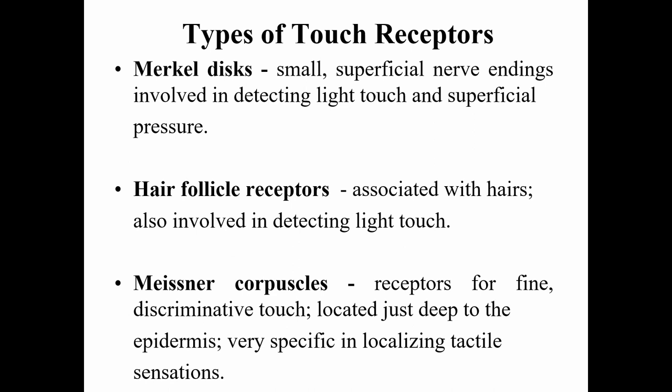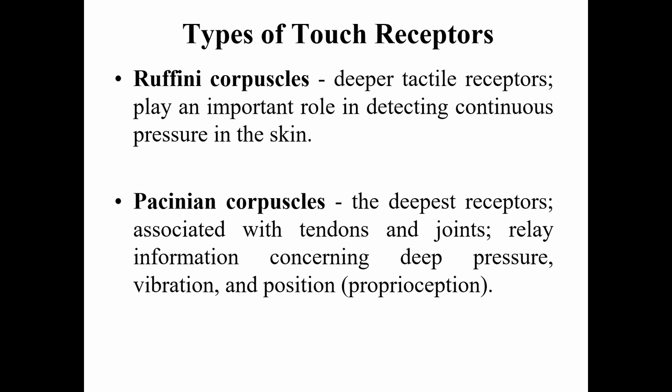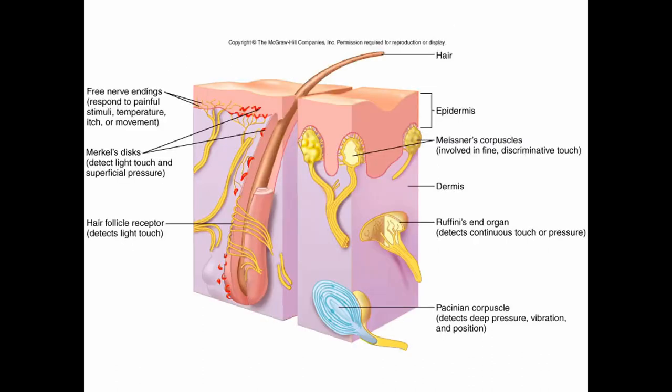We have different types of touch receptors. Merkel discs are superficial nerve endings involved in detecting light touch and superficial pressure. Hair follicle receptors are associated with hairs and also detect light touch. Meissner corpuscles are receptors for fine discriminative touch located just deep to the epidermis, very specific in localizing tactile sensations. Ruffini corpuscles are deeper tactile receptors that detect continuous pressure. The deepest receptors, associated with tendons and joints, relay information concerning deep pressure, vibration, and proprioception.